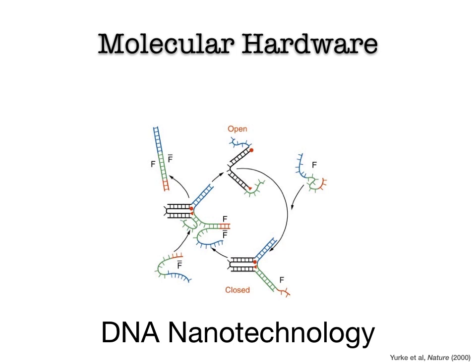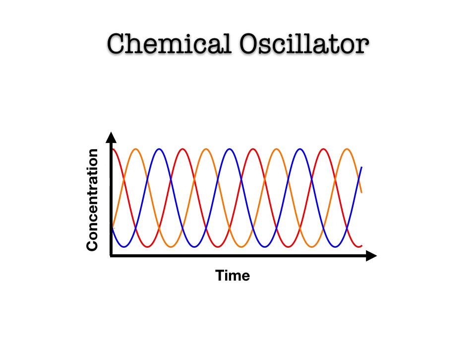It actually turns out that DNA is much easier to work with. Out of DNA, we can make molecular machines that take input and produce output. When we first learn a computer programming language, we write a hello world program. Well, this is chemistry and we need a different kind of hello world program — we decided to start with programming a chemical oscillator.